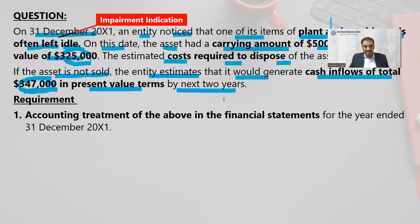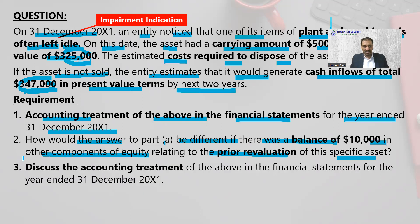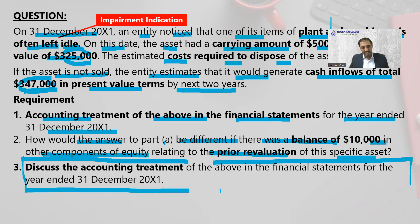The requirements: number one — accounting treatment of the above transaction in the financial statement for the year-end 31st December X1. Number two requirement: how would the answer to part A be different if there was a balance of 10,000 in OCE relating to prior revaluation of a specific asset? The first two requirements are exactly about F7 — making an extract. But in SBR, the word 'discuss' the accounting treatment means something about the caliber of SBR.